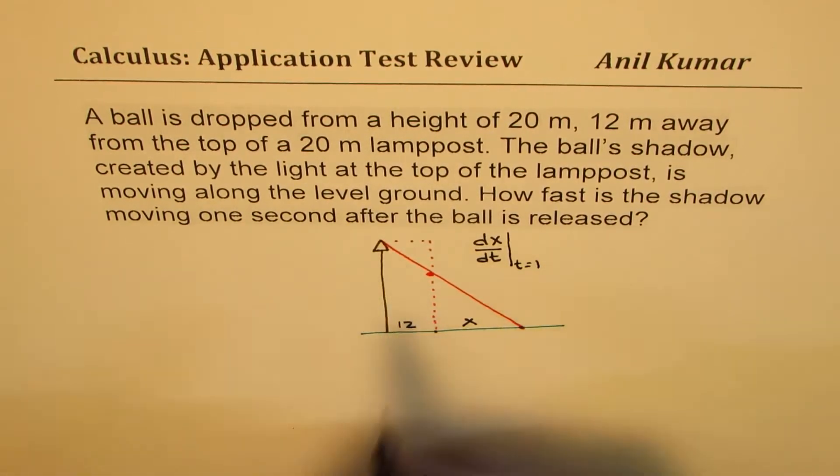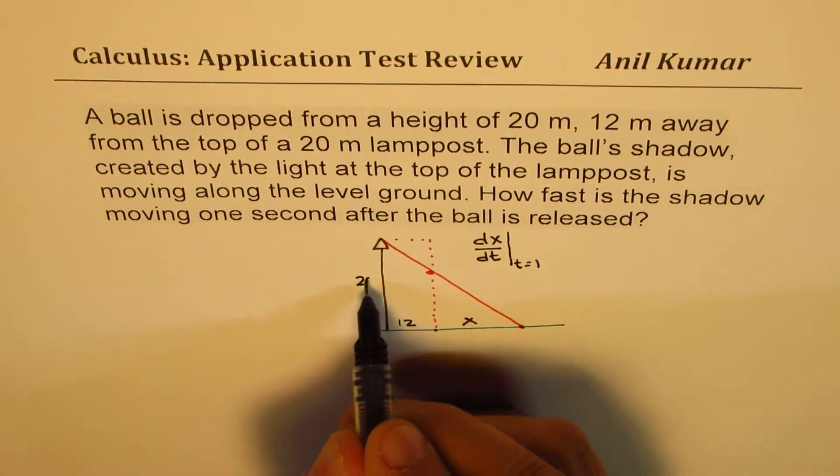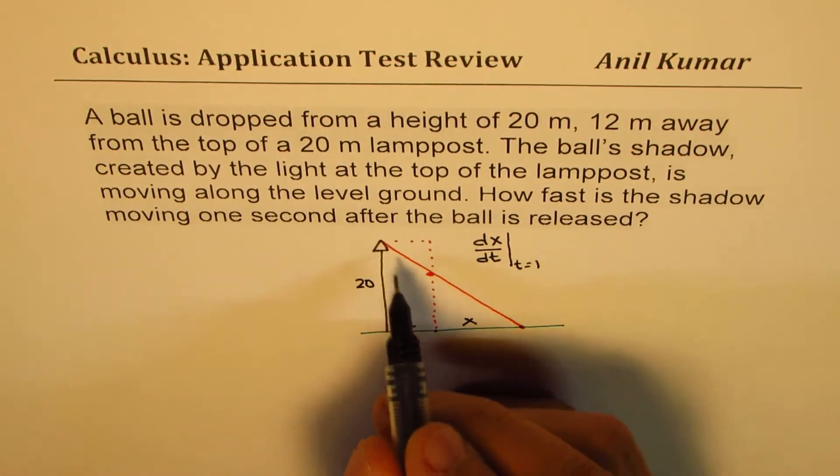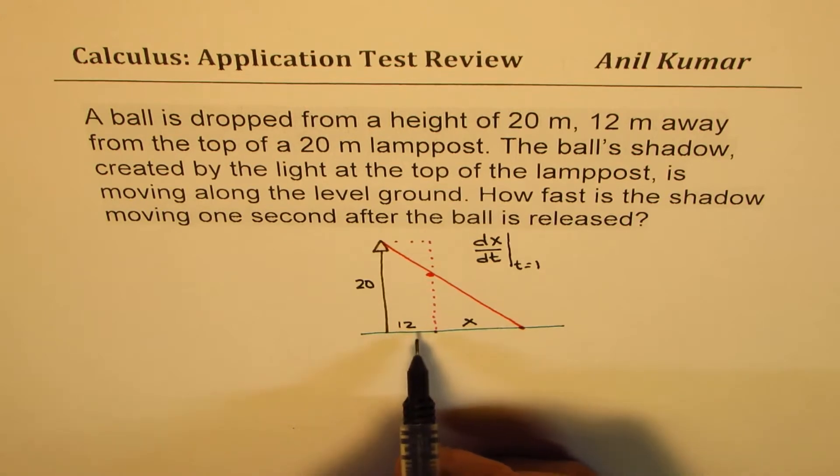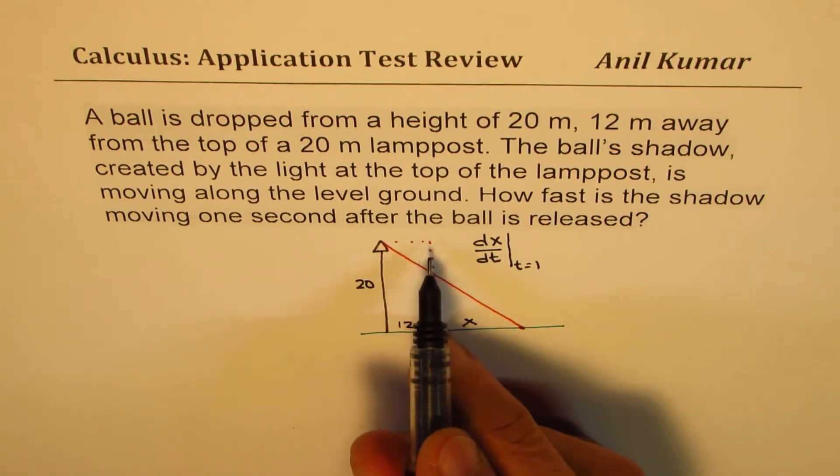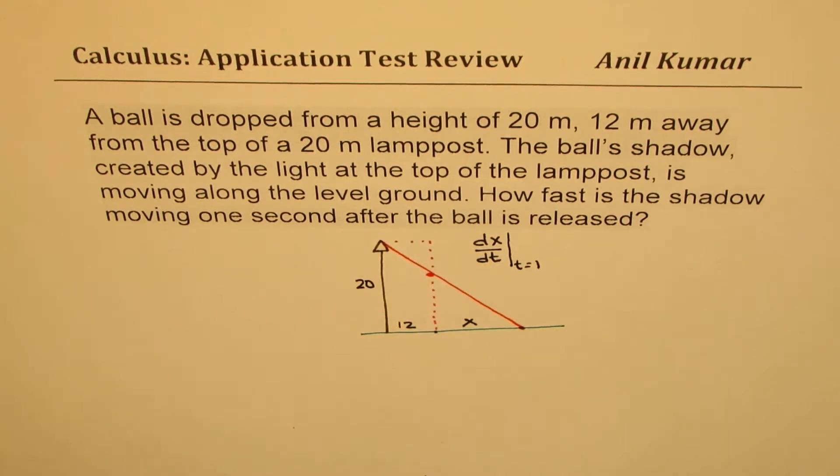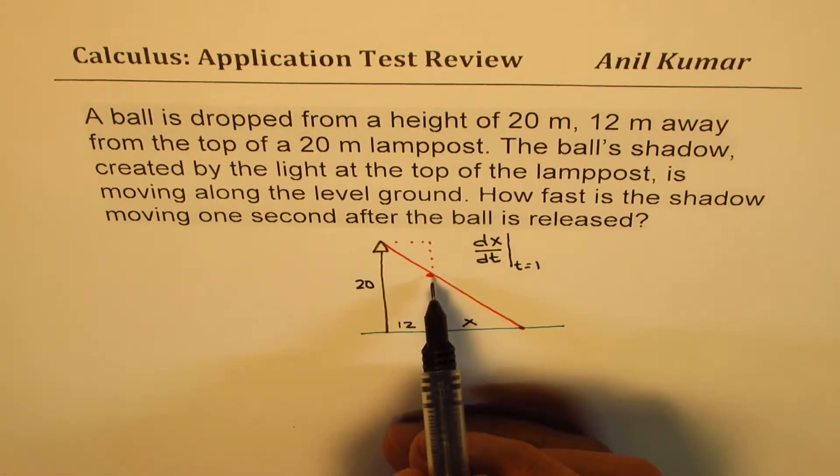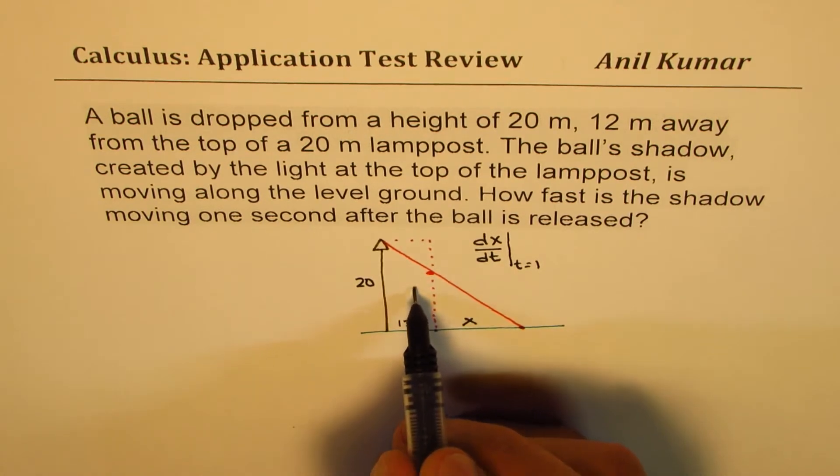And what are we given here? This lamp post is 20 meters high, and 12 meters away is where the ball falls. How do we do it? Now we may have to use some formulas which we learned in physics. We have to also find the height of the ball. So at any instance, let's say the height of the ball is y.